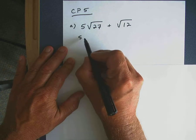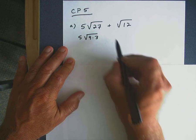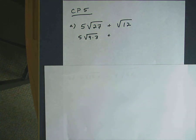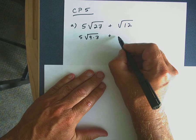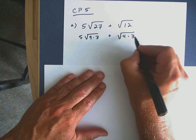We can rewrite the square root of 27 as the square root of 9 times 3. In a similar way, if you look at the square root of 12, 12 has a factor that we can take the square root of, and that would be 4. So let's rewrite the square root of 12 as the square root of 4 times 3.